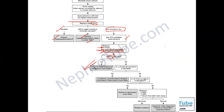Check for weight loss, hemoptysis, history of smoking, and persistent unexplained anemia to exclude malignancy. If 1,25-dihydroxyvitamin D is elevated, the patient may have lymphoma, sarcoidosis, or tuberculosis. If this lab investigation is unavailable, exclude these conditions by history, clinical examination, chest X-ray, and lymph node examination.